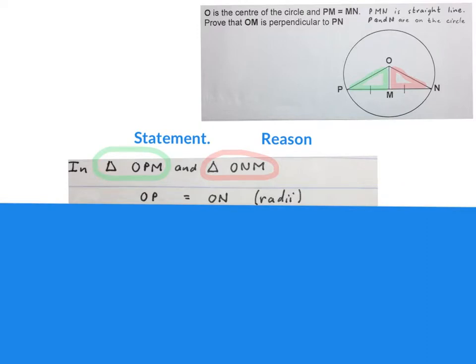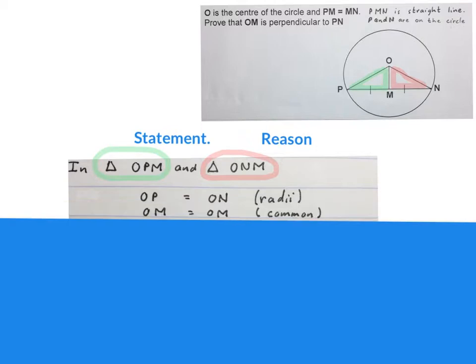We can write OP is equal to ON because they are radii — that line and that line are equal because they are radii. Next we can write OM is equal to OM; it is common. Both triangles are using the line OM — some people just say OM common.